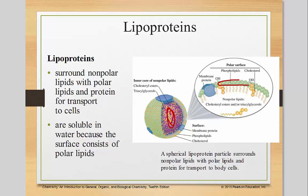That area up there is polar and can interact with water — that's where the phosphates are. And here are the nonpolar tails that are attracted to the lipids inside. These are soluble in water because the surface consists of polar lipids.